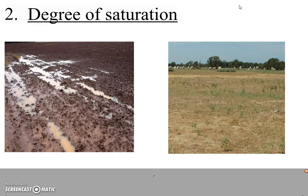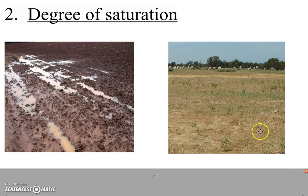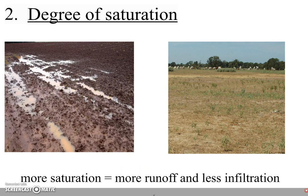The second factor we're going to look at is the degree of saturation. Let's say you have an area where the soil is very wet and an area where the soil is dry. If it were to start to rain, which area would let the water infiltrate faster? Think of it like a sponge — if you spill a glass of water, do you use a wet sponge or a dry sponge to soak it up? You use the dry sponge, because if it's dry it has room inside to hold the water. If it's already saturated, it doesn't have much room. So the more saturation there already is, the more runoff you're going to get and the less infiltration there will be.